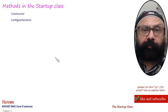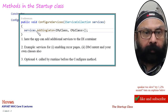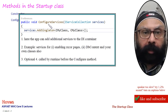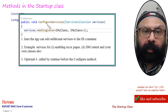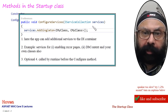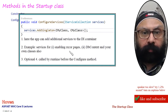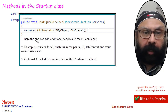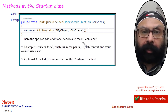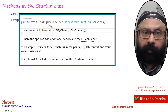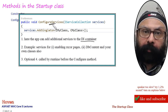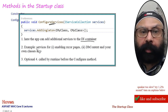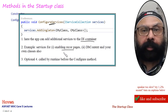The next method is ConfigureServices. The importance of this method is that it gets a collection of all the services available to you, and this collection allows you to add more services to your application. Here the app can add additional services to the DI container. For example, you can add services for enabling Razor Pages and add DbContext — a class for database connectivity.